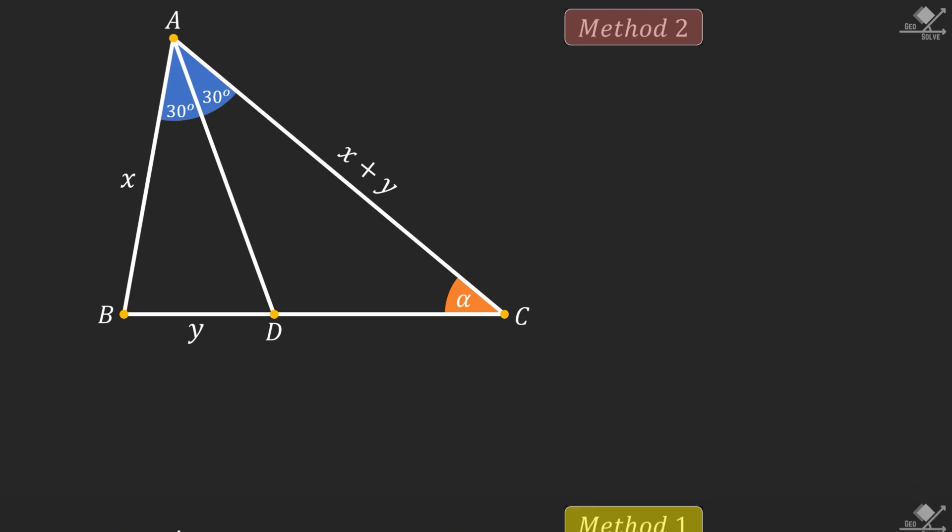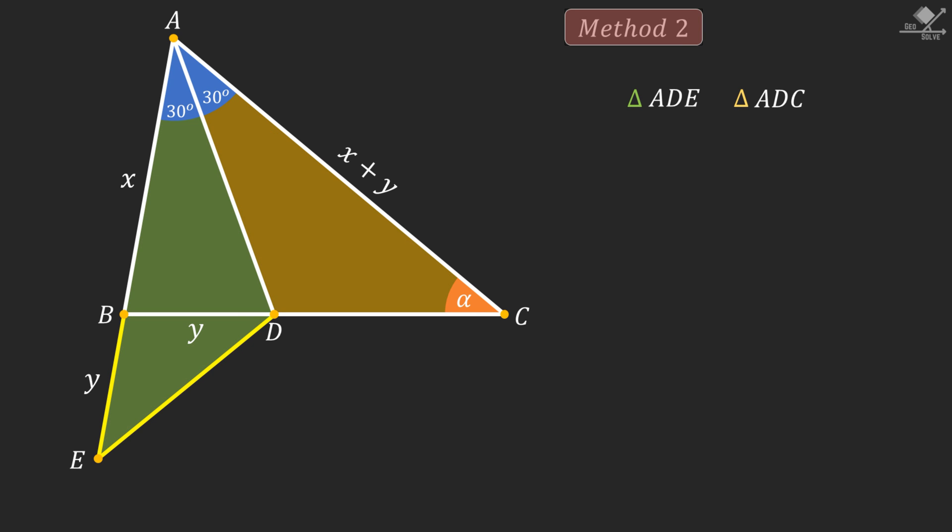Now let's start the second solution method. First, extend line segment AB for another Y units. And connect point E and point D with a line segment. And focus on these two shaded triangles.